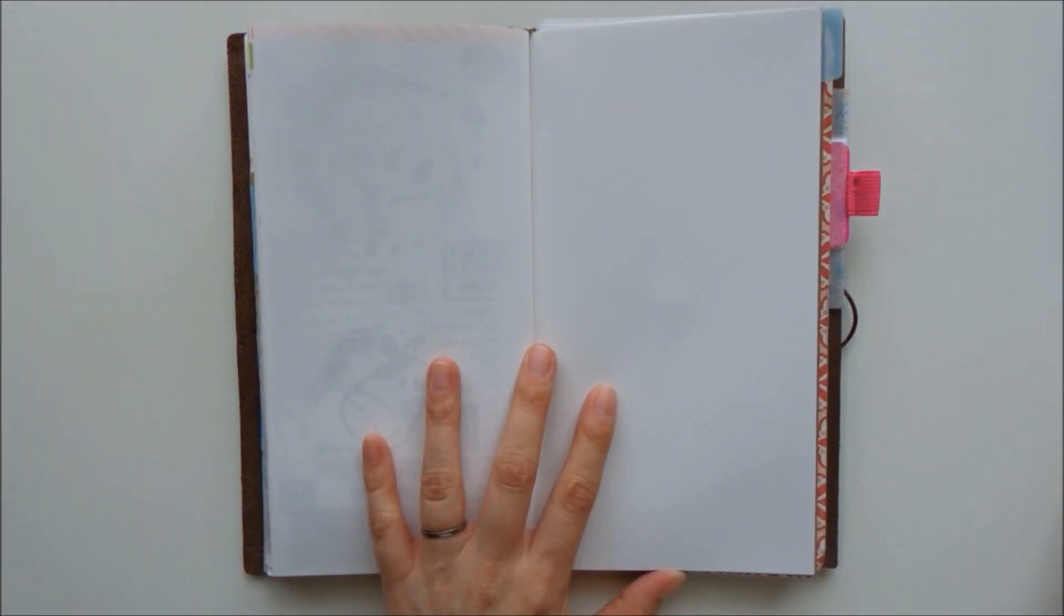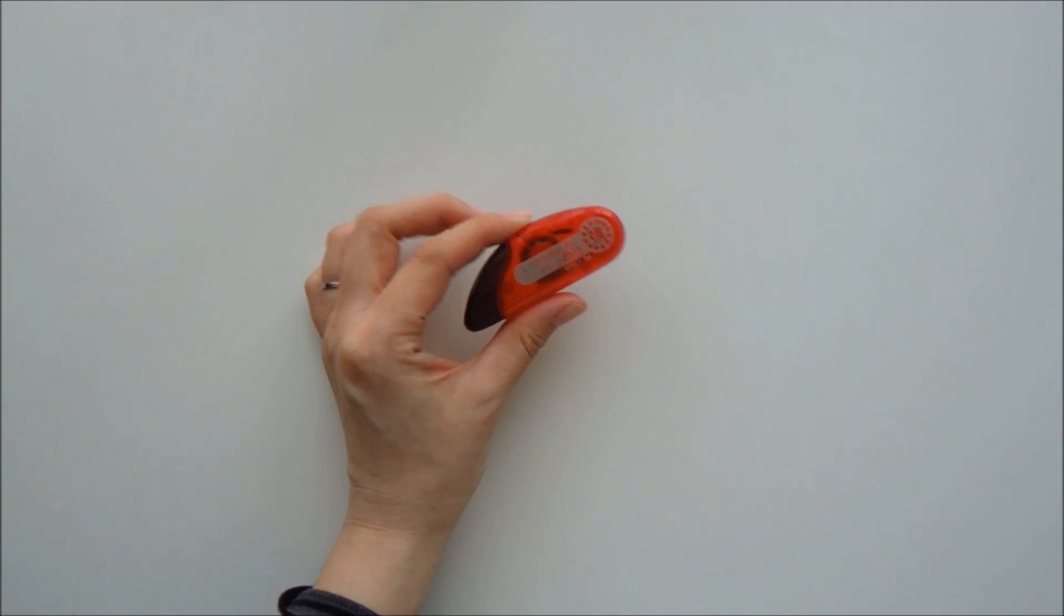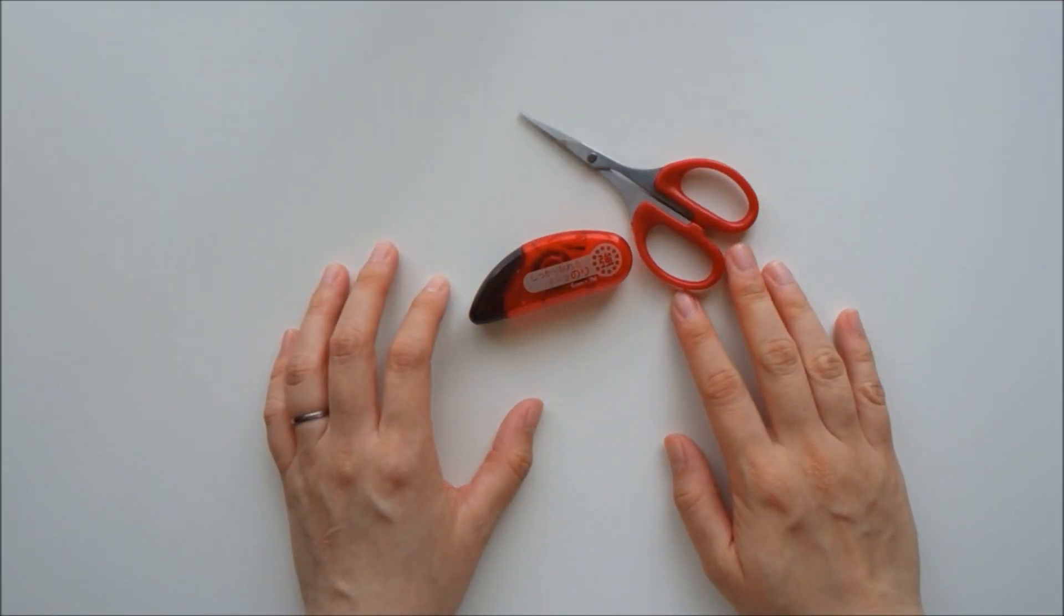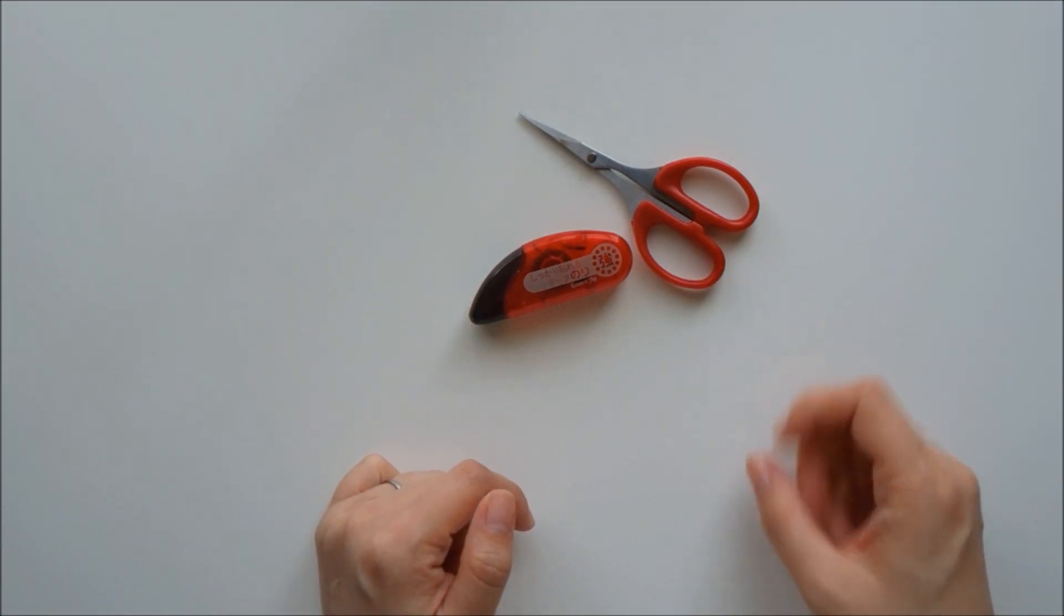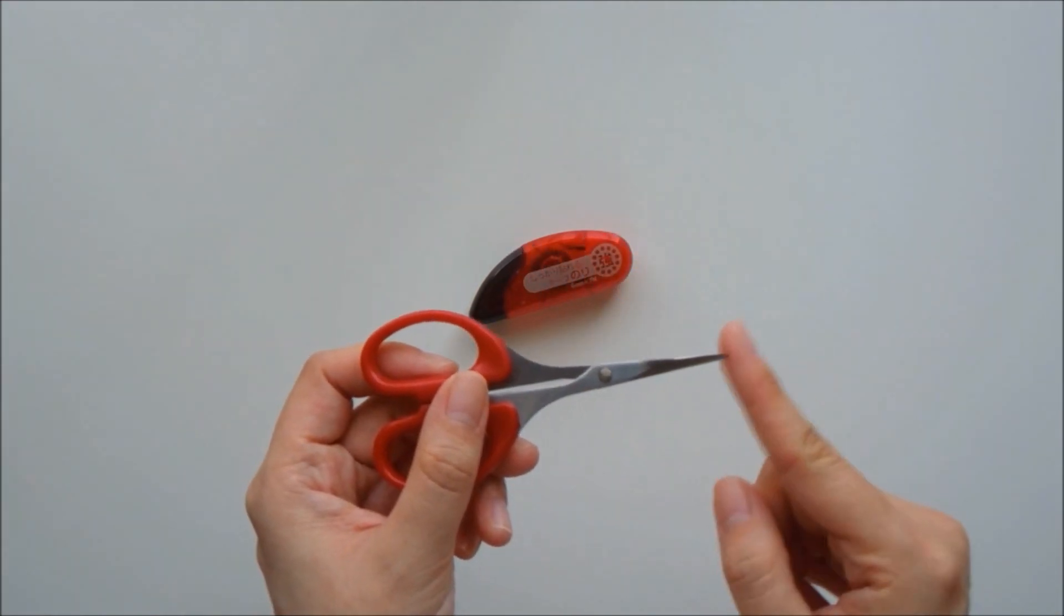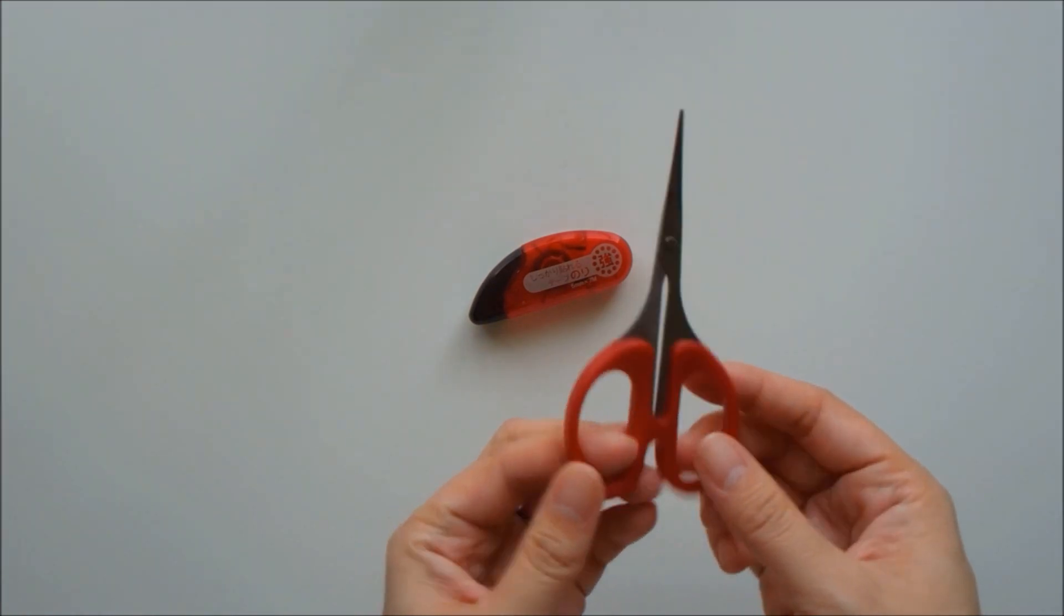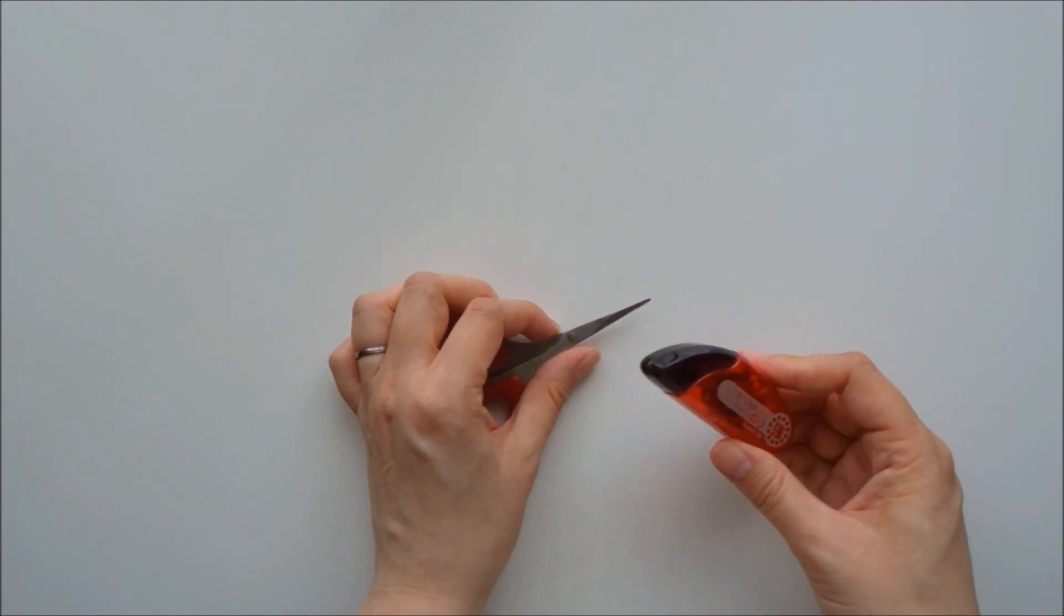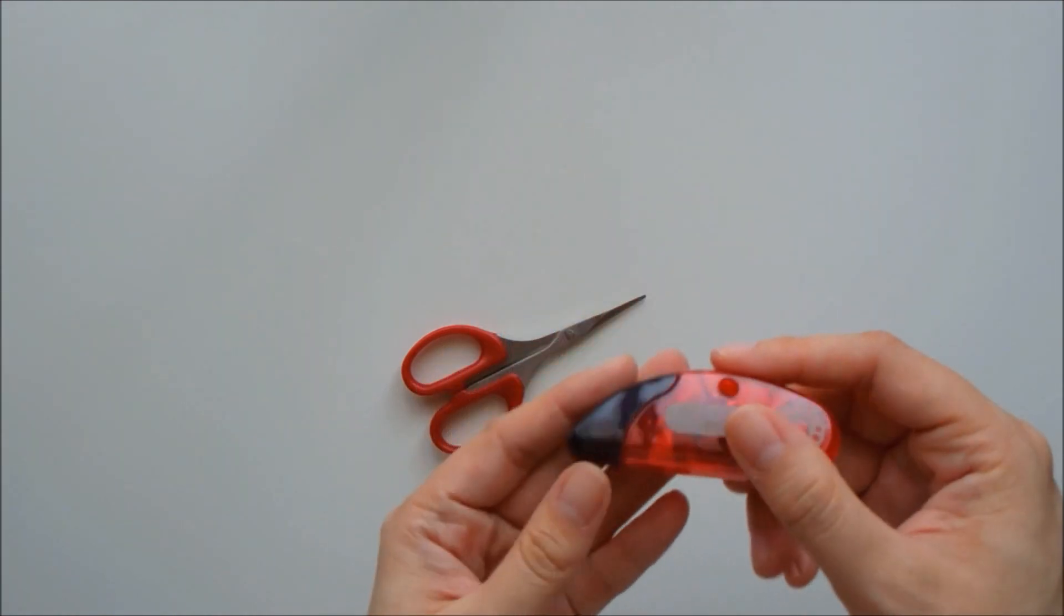Next on the list are just the basics: the tape runners, glue sticks, scissors, the basics that we need for decorating in the traveler's notebook. I like the thin tip scissors because they're really precise. They're nice and small and easily portable. And I love the tape runner. Sometimes the glue stick is hard to get into small corners, but with the tape runner you can easily do that.